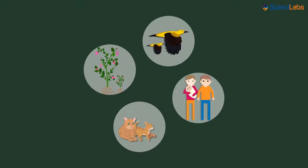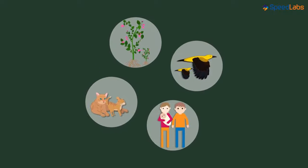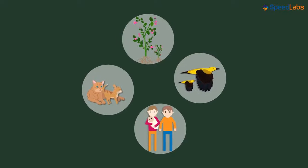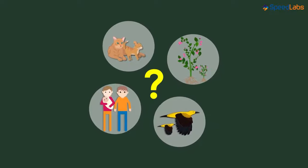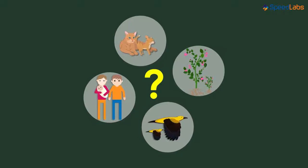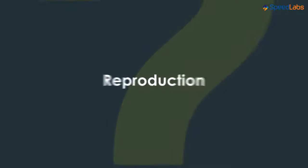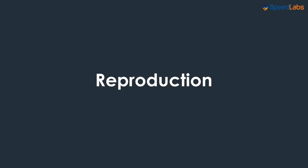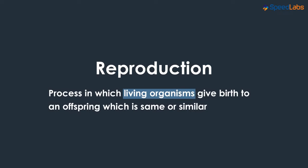All living organisms are capable of giving birth to young ones which are either exactly the same or somewhat similar to them. The process of giving birth to an offspring is called reproduction. In simple terms, it is defined as the process in which living organisms give birth to an offspring which is the same or similar to them.